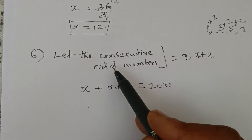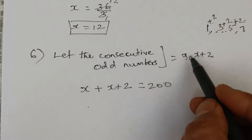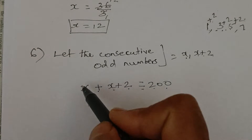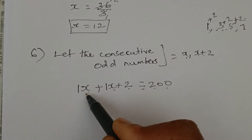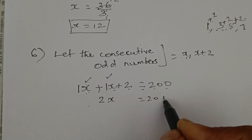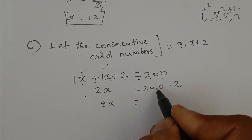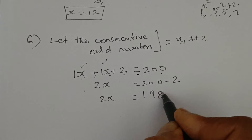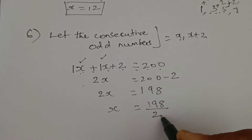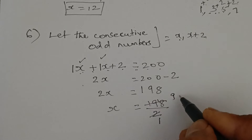These x and x + 2 are the two consecutive odd numbers. Their sum equals 200, so: x + (x + 2) = 200. We can add the like terms: 1x + 1x = 2x. Take the number to the other side: plus 2 becomes minus 2. So 2x = 200 − 2 = 198. Therefore x = 198 ÷ 2. Divide: 198 divided by 2 gives 99.